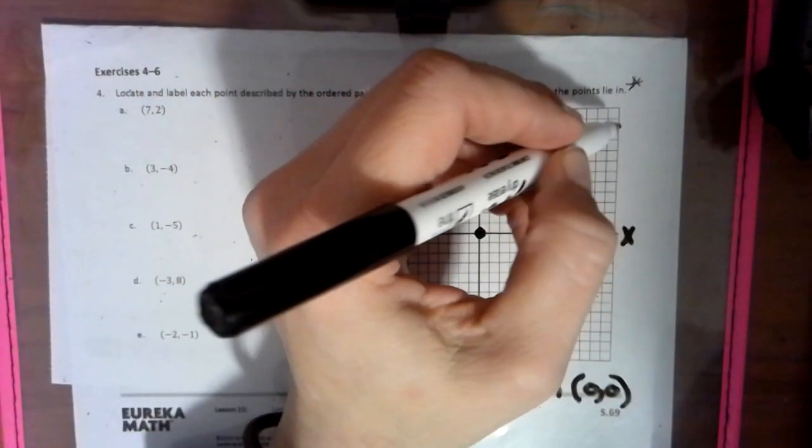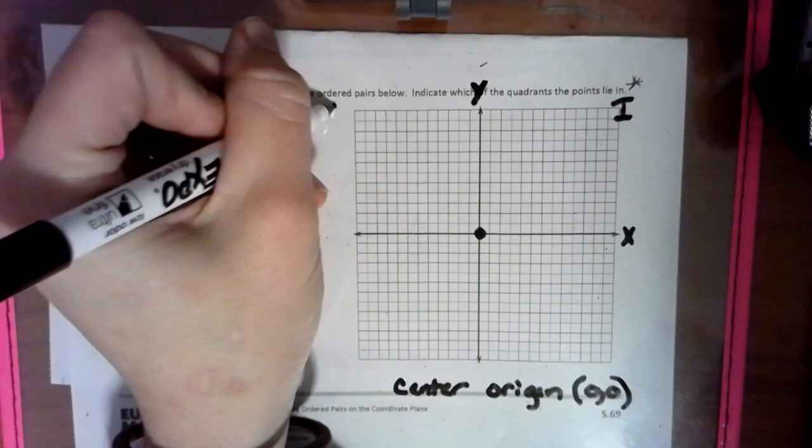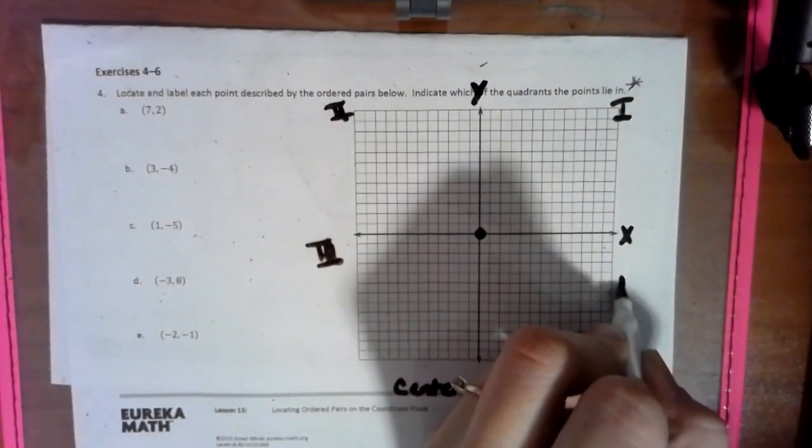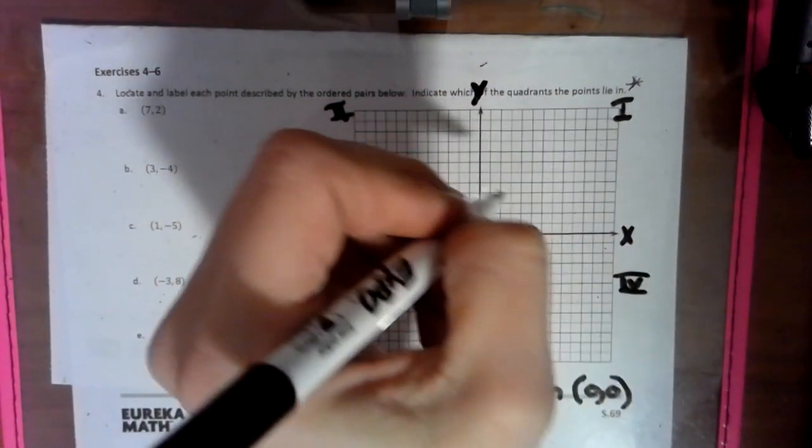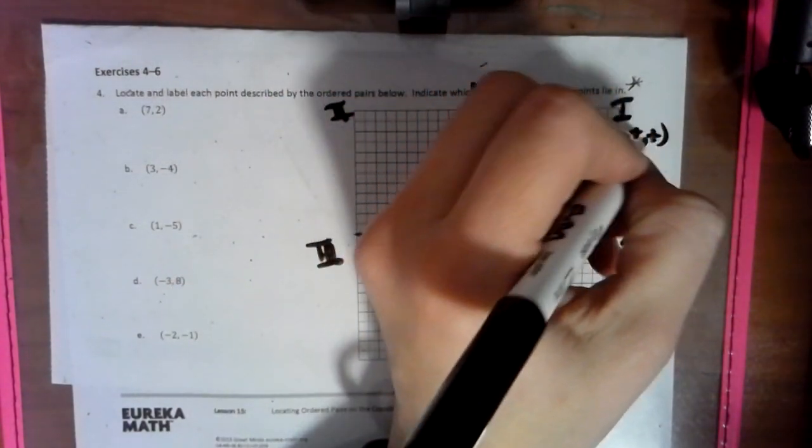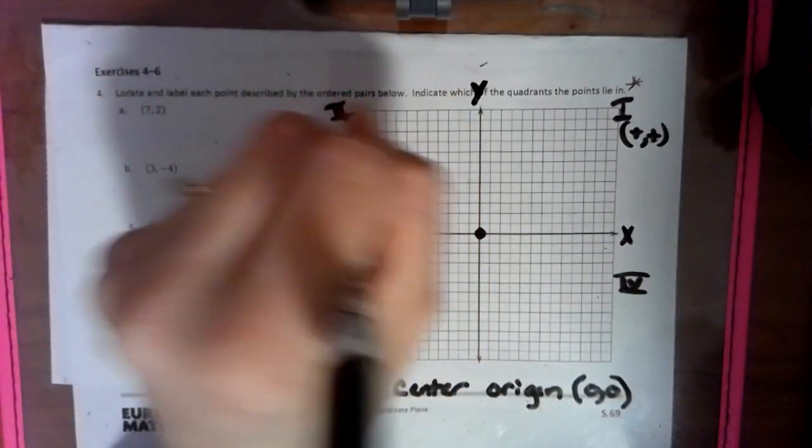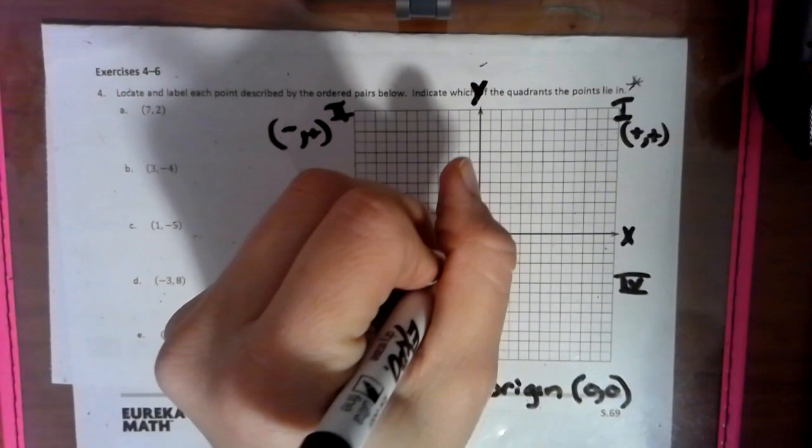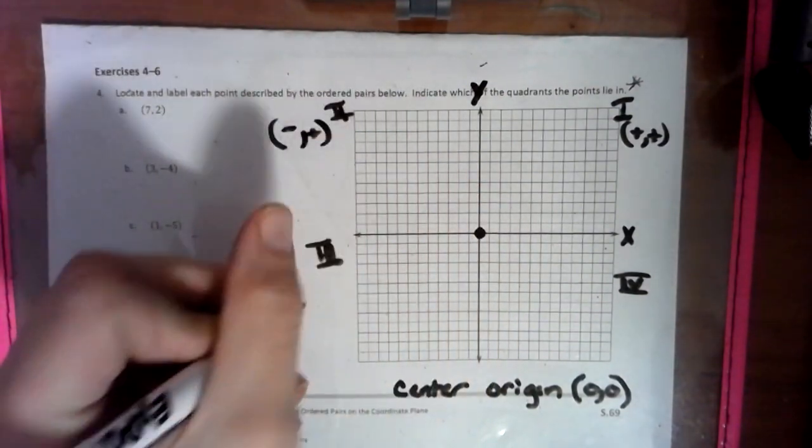Now this is considered quadrant 1, and this is quadrant 2, and down here is quadrant 3, and over here is quadrant 4. Now points up here are the positive positive points, and the points over here are over to the negative, up to the positive, and over here is over positive, down negative.